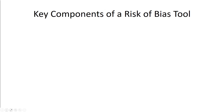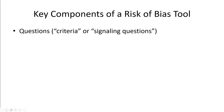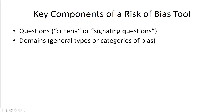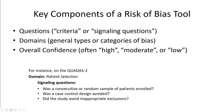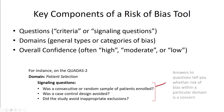What are some key components of a risk of bias tool? There are the signaling questions — sometimes called criteria. There are the domains — the general types or categories of bias. Then there's overall confidence in what the study is telling us about our primary outcome of interest, often listed as high, moderate, or low. For instance, on QUADAS-2, under the domain for patient selection, there are three signaling questions, and answering these helps you assess the risk of bias for that domain.